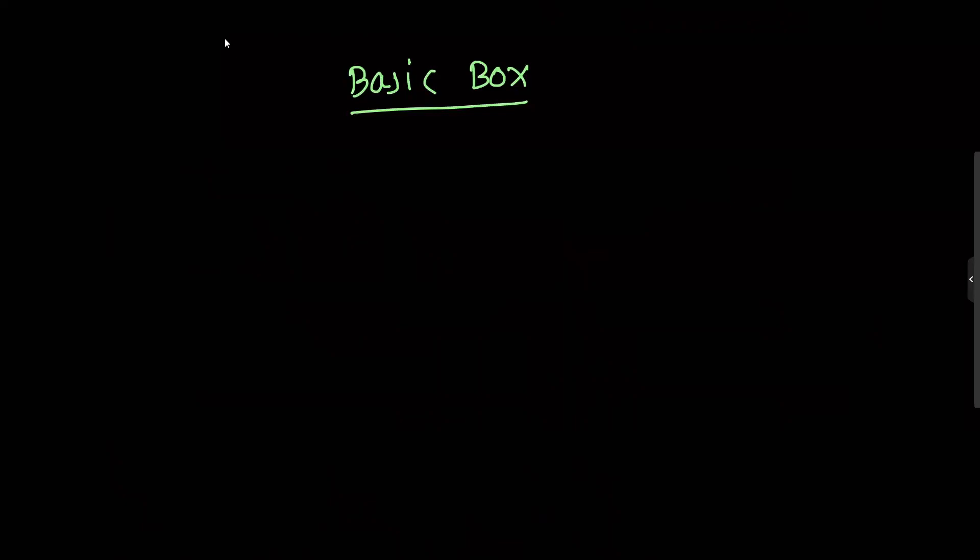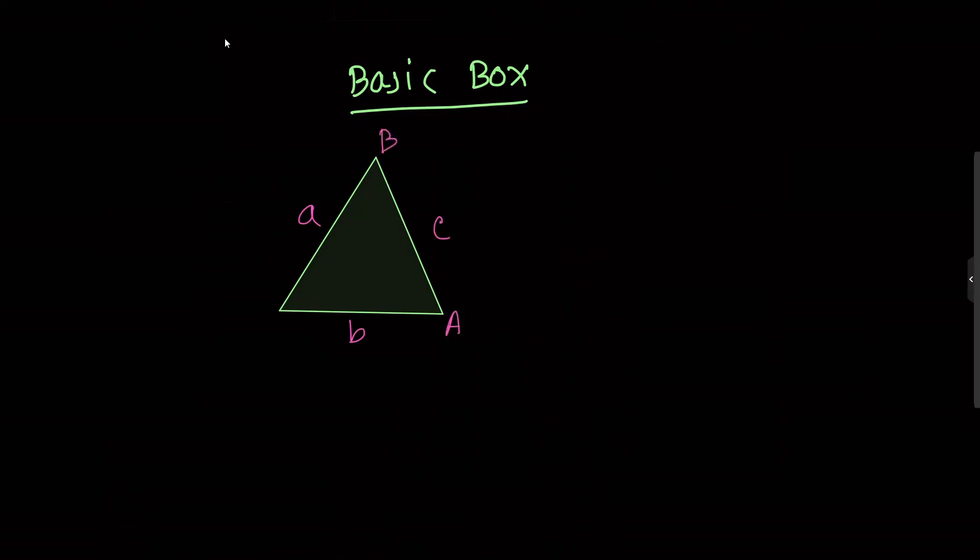For the basic box, if you have a triangle with three vertices A, B, C and three sides a, b, c, we can apply a formula. Let me show you how the cosine formula works for finding the third side.